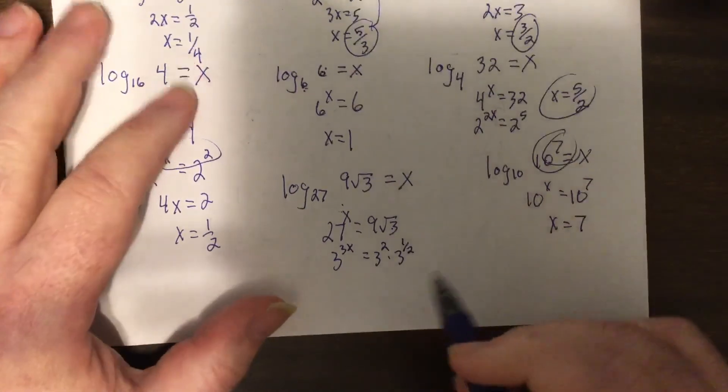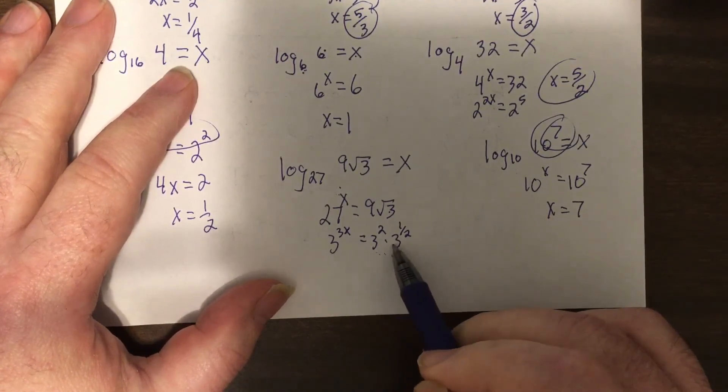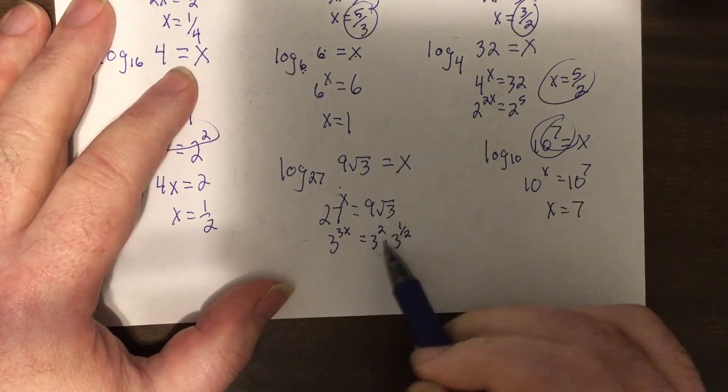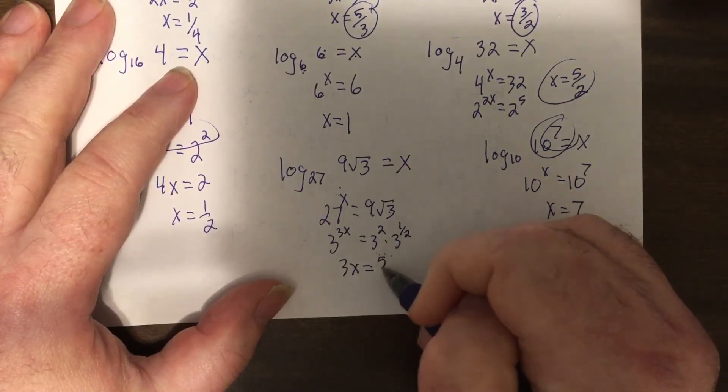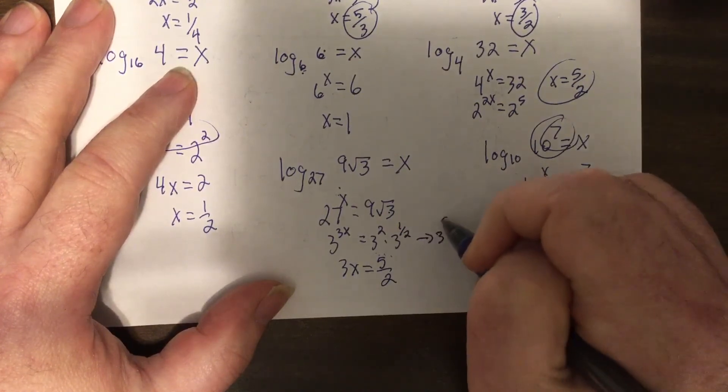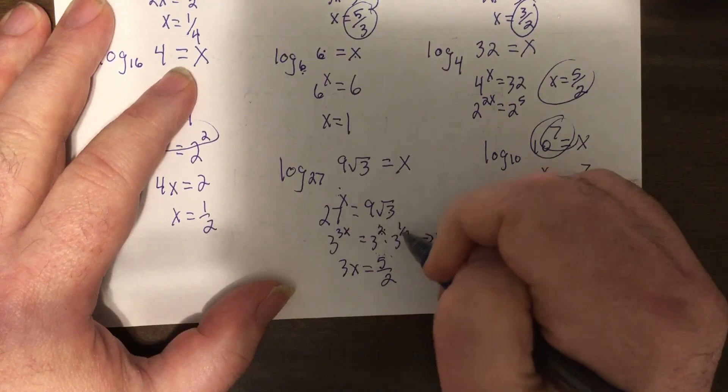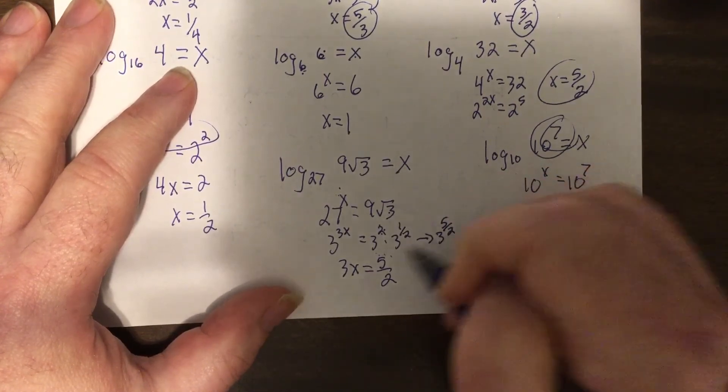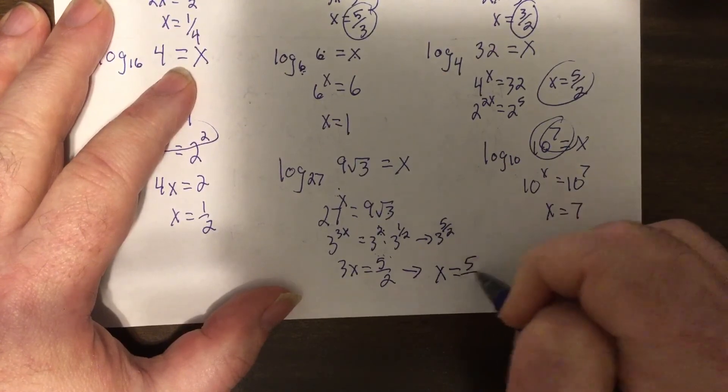So it'd be 3x equals 5 halves, because this would end up being 3 to the 5 halves, because 4 over 2 plus 1 over 2 is 5 over 2. So this would be x equals 5 sixths.